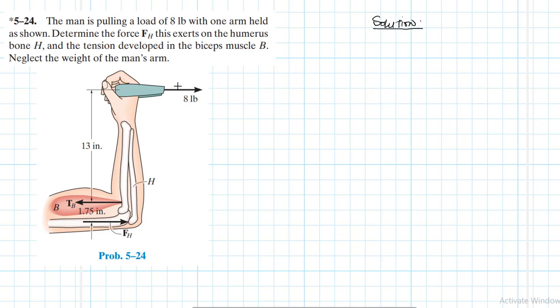So we have a human arm and this human arm is pulling, or exerting a force of eight pounds. We have been asked to determine FH which is one of the forces that is going to be developed in this bone they are calling the humerus, I hope I'm pronouncing this well, humerus bone.